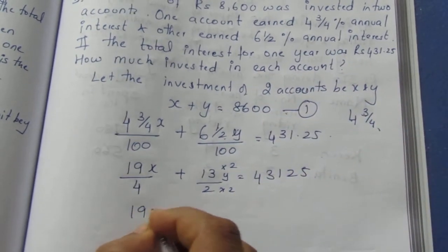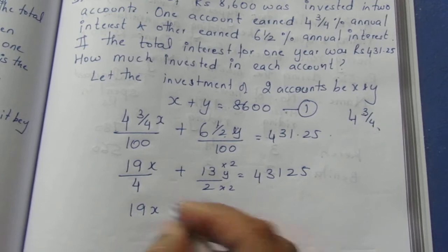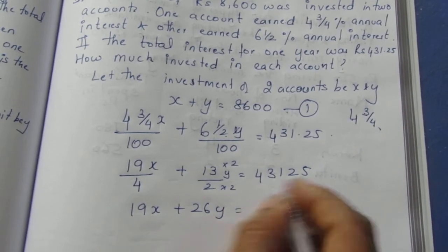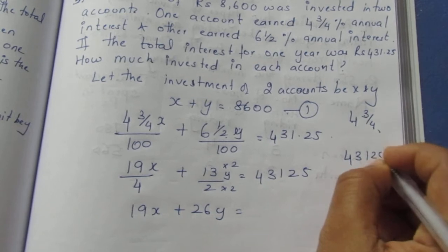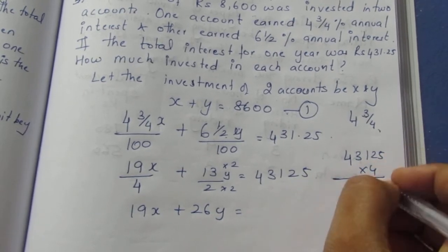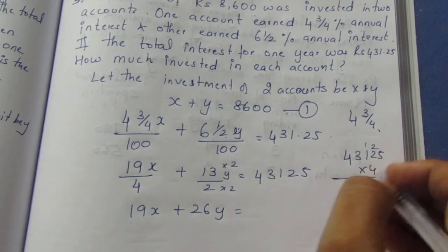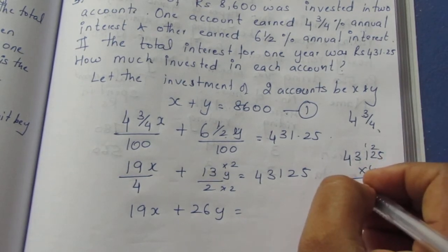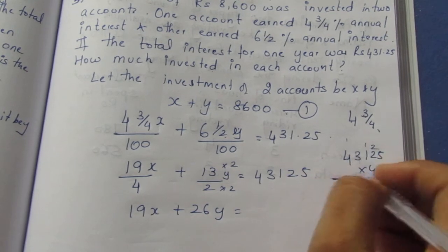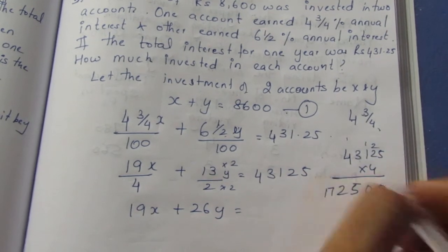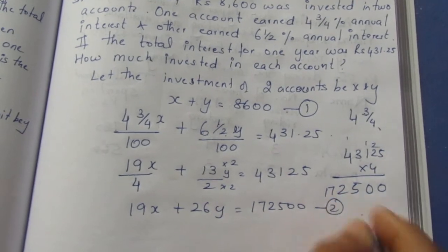So we have 19x plus 26y divided by 4, equal to the right-hand side. Multiplying both sides by 4: 431.25 into 4 equals 1725. So equation 2 becomes: 19x plus 26y equals 1725, and after multiplying through, equals 172500.